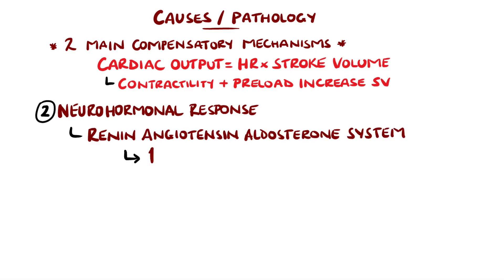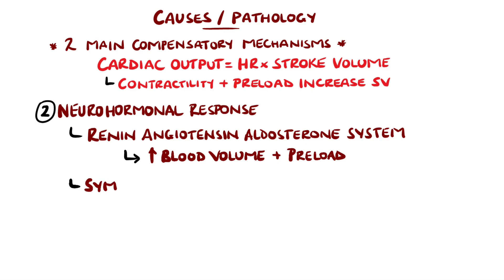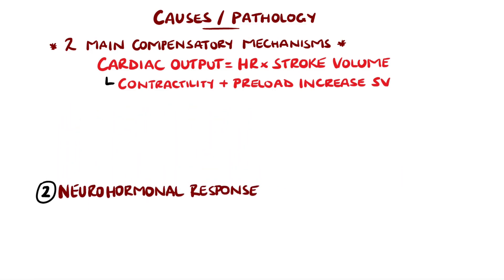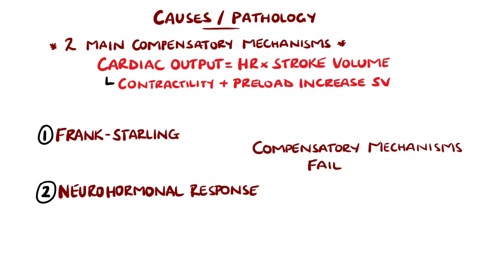The second compensatory mechanism is the neurohormonal response via the renin-angiotensin-aldosterone system, which attempts to increase blood volume and therefore preload, as well as maintaining blood pressure. The second component is the sympathetic nervous system, which increases contractility and heart rate. As remodelling continues and the left ventricular function decreases, the compensatory mechanisms are overwhelmed and even exacerbate the deterioration, leading to heart failure.